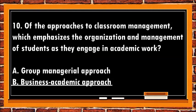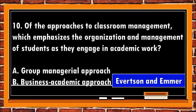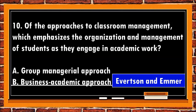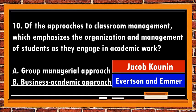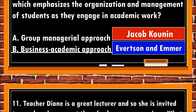The best answer is b. Business academic approach. This is a well-managed classroom that is free from disruptions, where students behave in an orderly manner and are involved enthusiastically in learning. Developed by Evertson and Emmer, the emphasis was on the organization and management of students as they engage in academic work. Evertson and Emmer divide organizing and managing student work into three major categories: establishment and communication of work assignments, standards and procedures, monitoring of student work, and feedback to students. The group managerial approach to discipline is based on Jacob Kunin's research, emphasizing the importance of responding immediately to group student behavior that might be inappropriate or undesirable, rather than dealing with problems after they emerge.